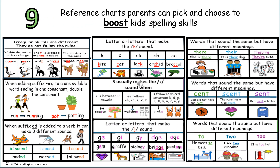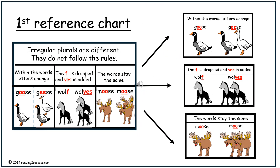So let's get started. Our first reference chart focuses on three irregular plurals — they do not follow the rules. The examples are goose and geese, wolf and wolves, and moose and moose.